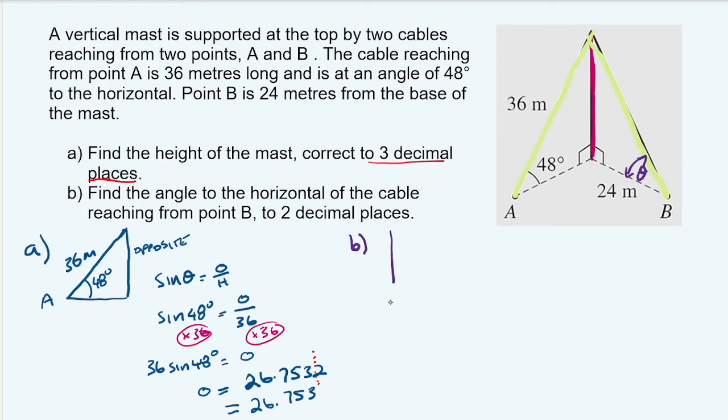So we have our mast, we have our base of 24 meters, we have point B, we have our mast height, which is 26.753. And then we need theta in here.